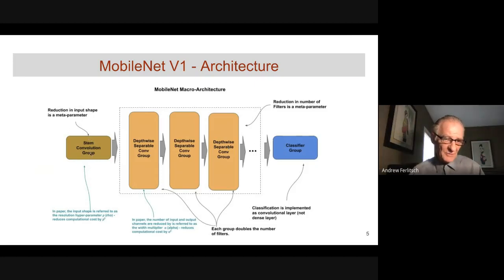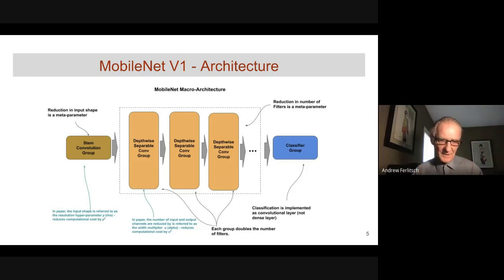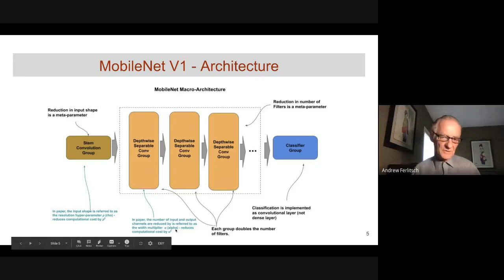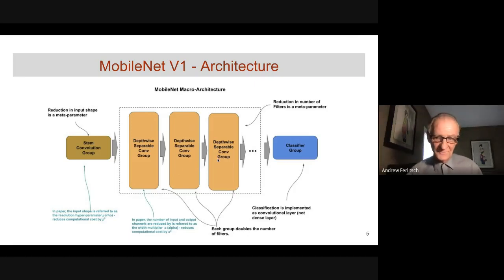In the stem group, the meta-parameter rho controls reduction of the input shape, which we'll discuss in more detail. You can further reduce the width of each convolution through another meta-parameter called alpha, which reduces the number of feature maps. Every group subsequently doubles the number of output feature maps.